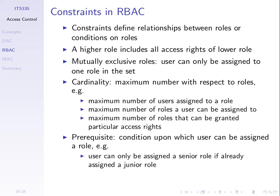There may also be prerequisites—for example, a user can only be assigned a senior role if they've already been assigned a junior role. Role-based access control is mainly used in computer systems where there's a strong relationship with the organisation, whereas discretionary access control is mainly used in file systems. For computer applications and websites for internal organisational use, role-based access control may be more appropriate.